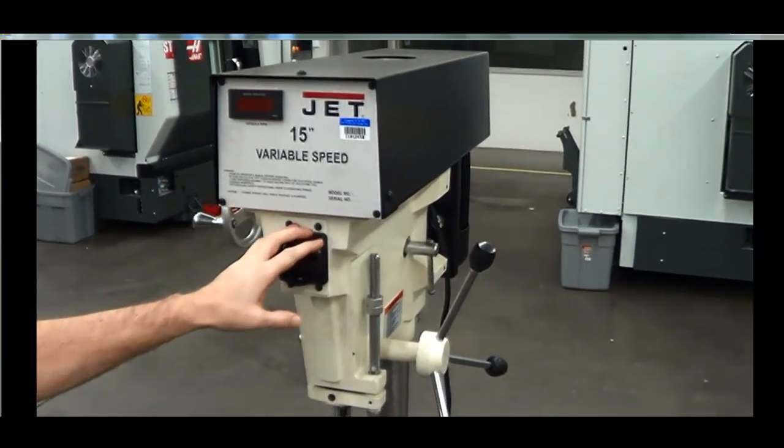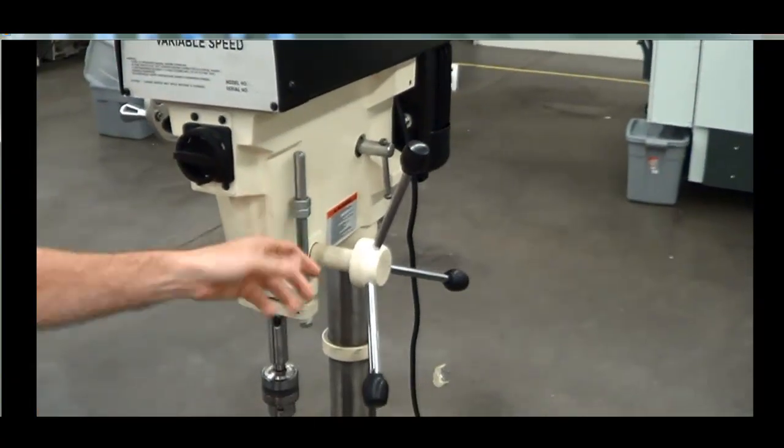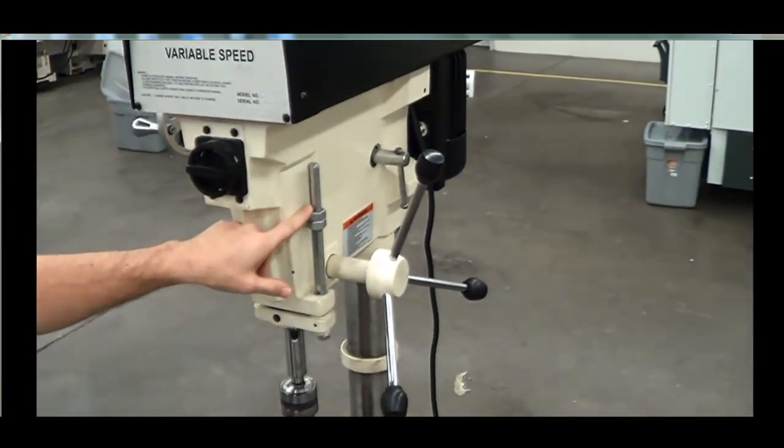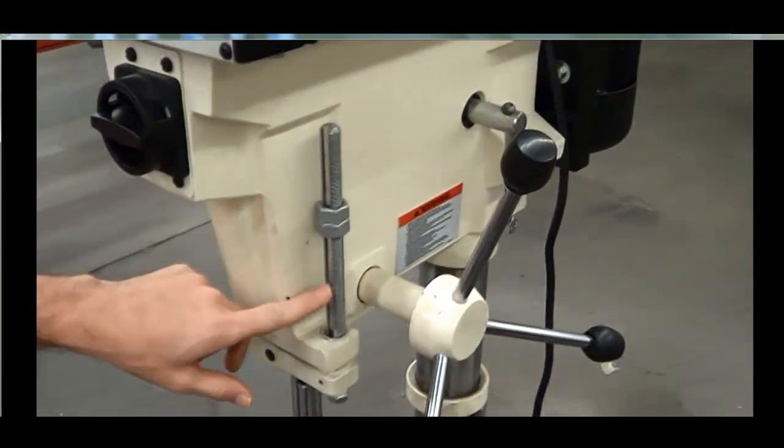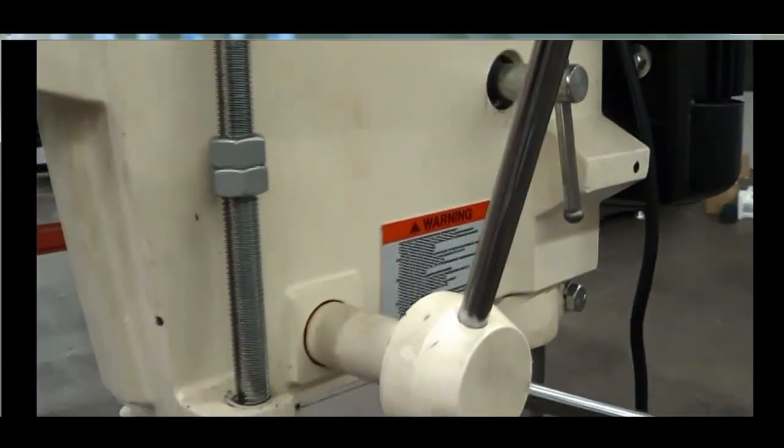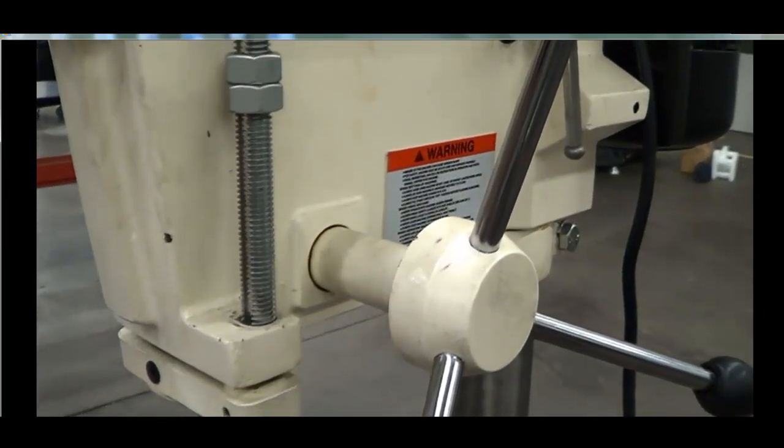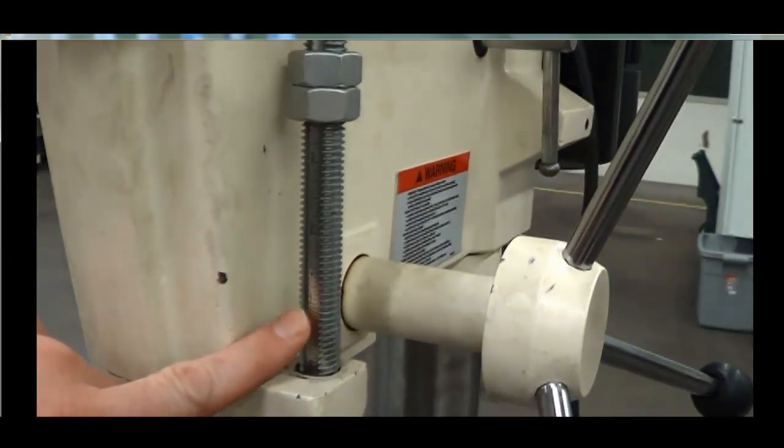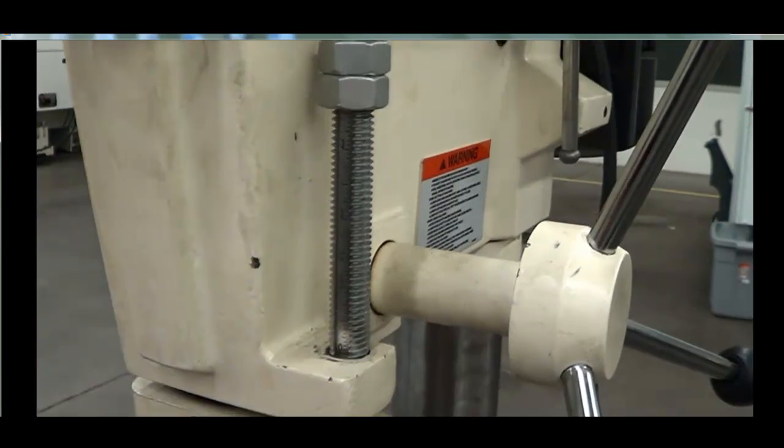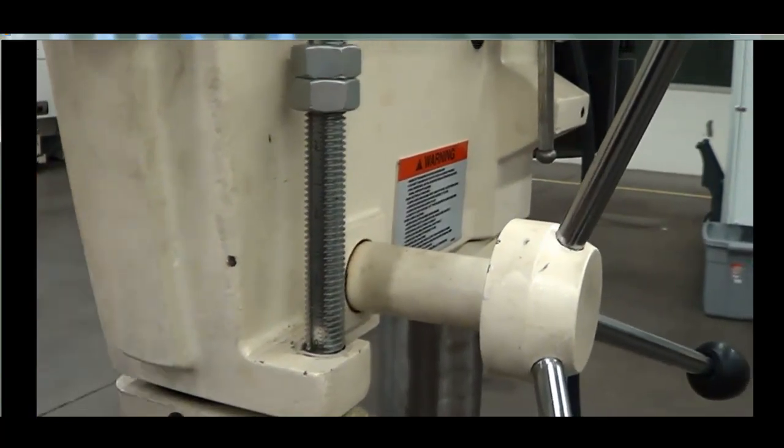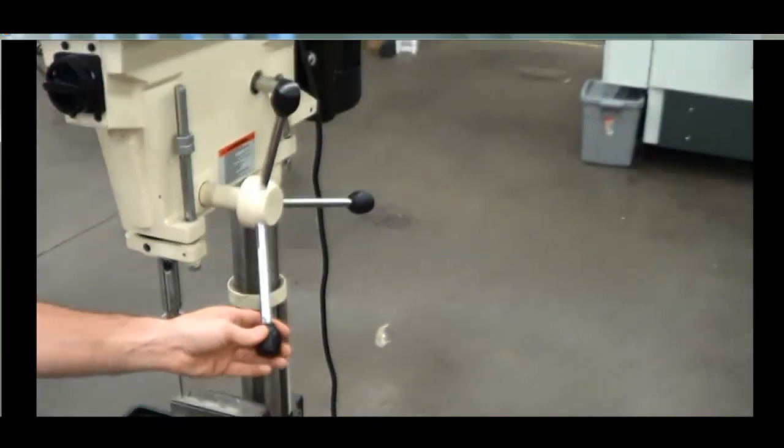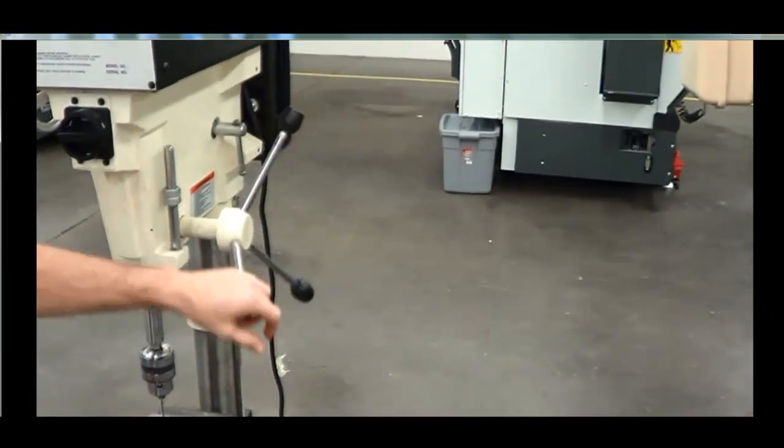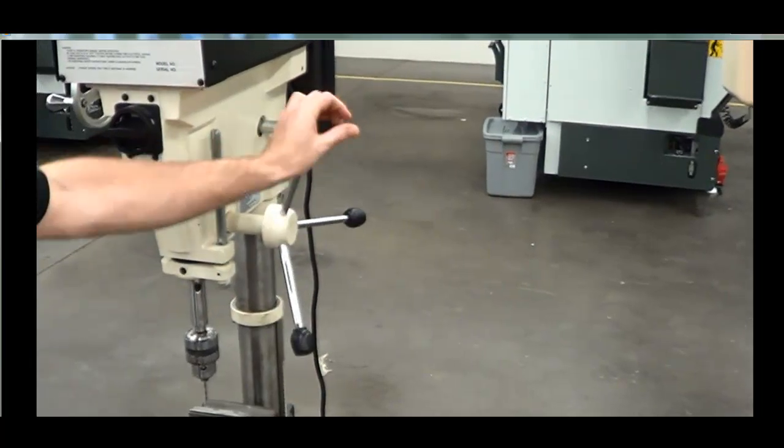You have an on-off switch, a depth stop that's adjustable, and it has graduations that are printed right here. So you can actually gauge how deep you're going. Now granted, none of this is accurate because it's just printed, it's not engraved, and it's not calibrated necessarily. You have your quill handle here, so it will retract and advance the quill.